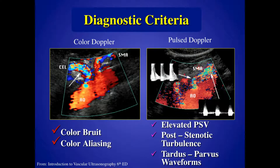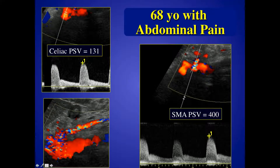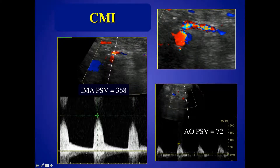The color Doppler will show you the aliasing and bruit artifacts; the pulse Doppler will give you the high velocities, abnormal ratio, and post-stenotic turbulence with tardus-parvus waveforms. Here's a 68-year-old presenting with abdominal pain. The celiac has a velocity of 131, in the normal range. The SMA is elevated at 400, with a bruit artifact right at its origin. The IMA velocity is also elevated, and you can see the abnormal flow in the IMA compared to the aorta. Two-vessel disease — classic chronic mesenteric ischemia.